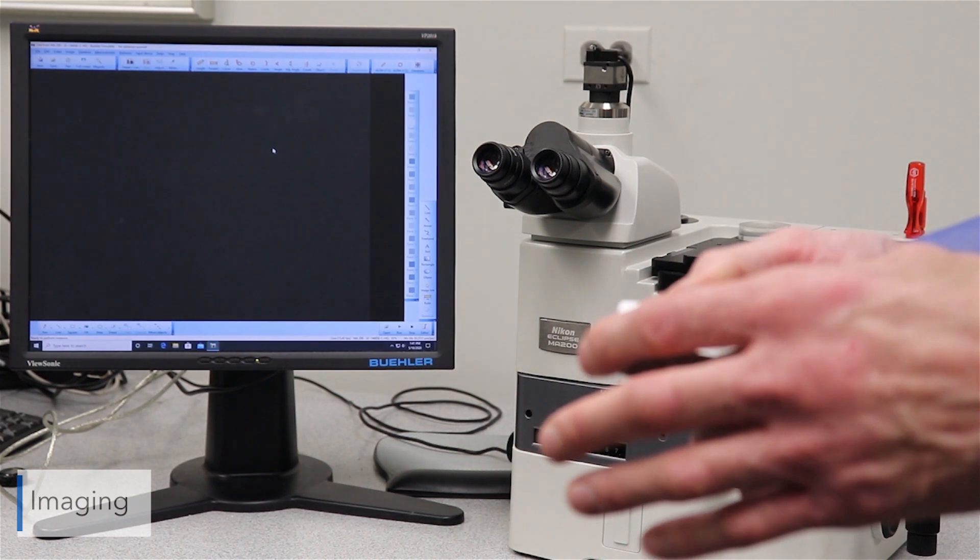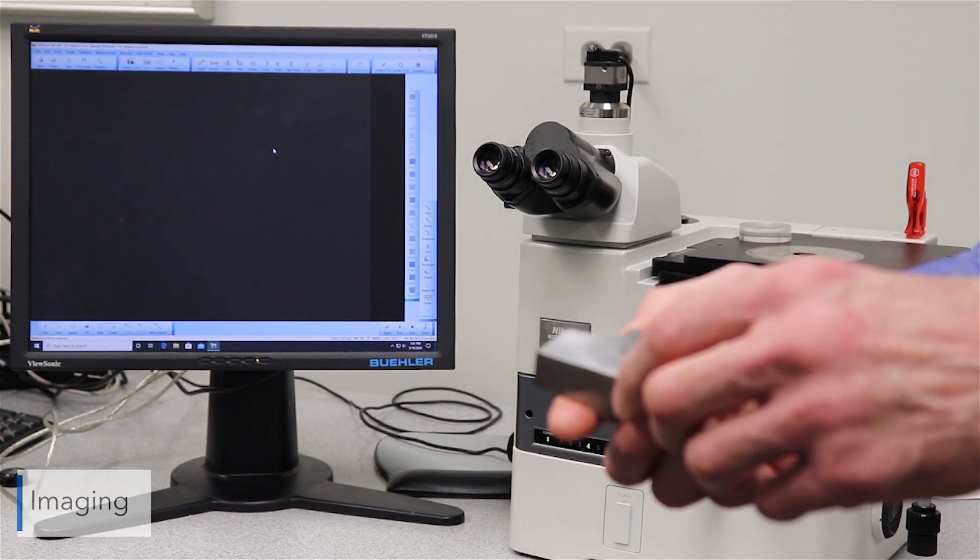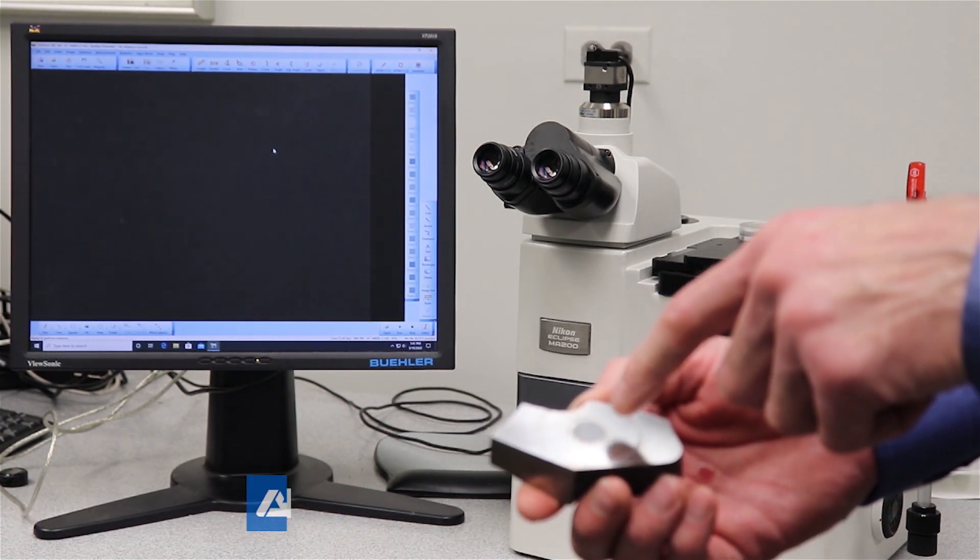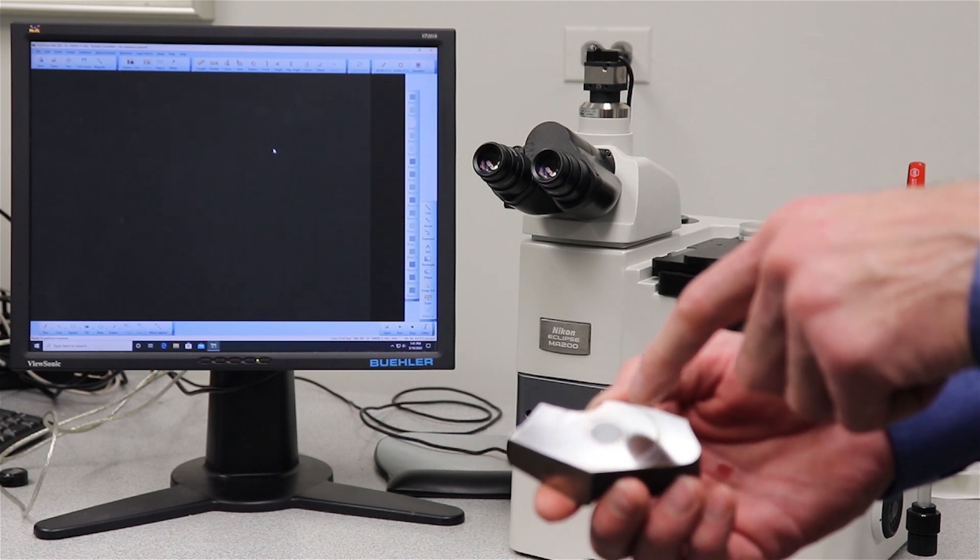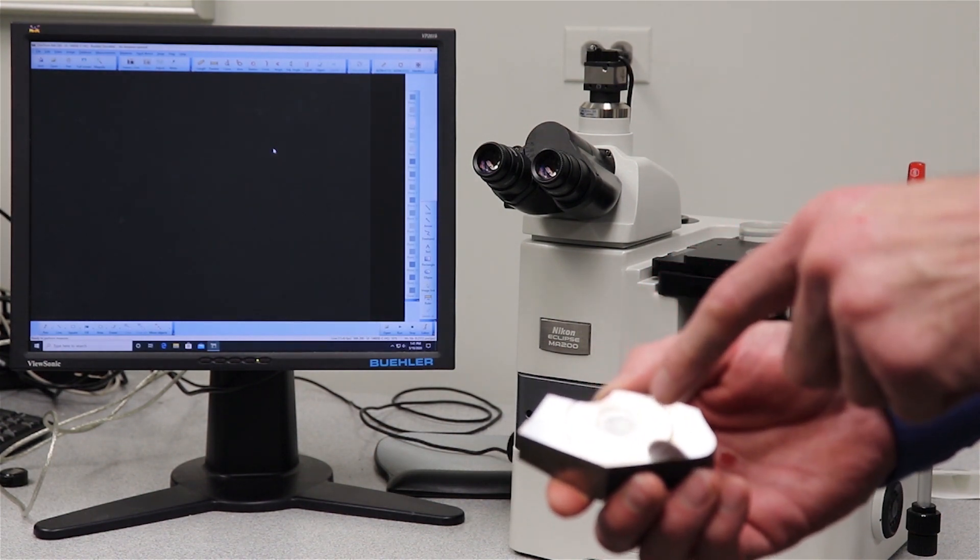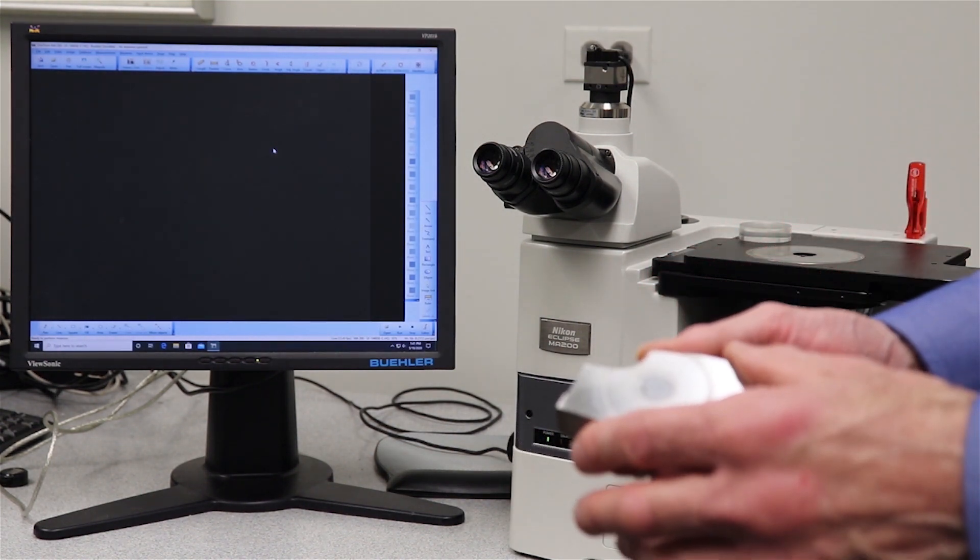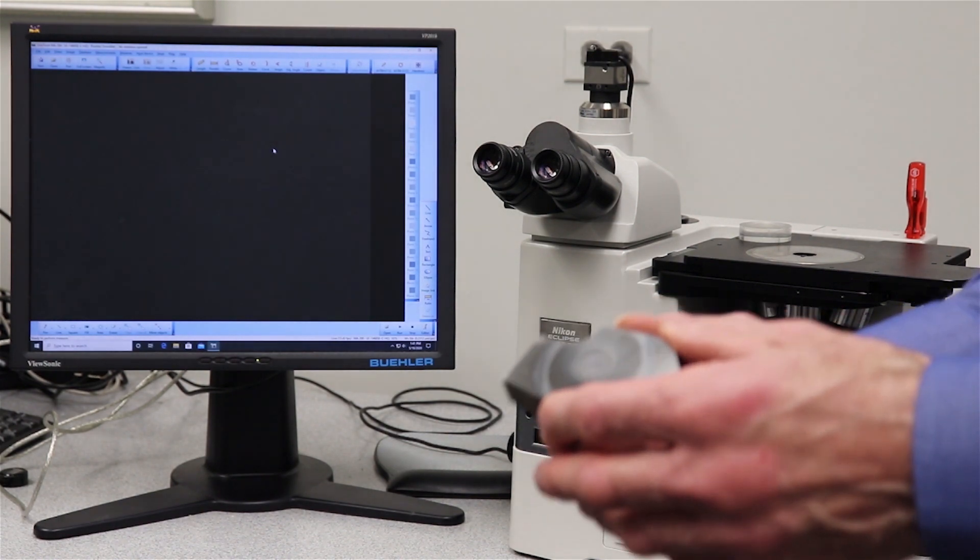We have our sample that we've electropolished. This is the 4130 steel sample. We've got our selected area in here where we have the mask on, and this is the surface area here that's been polished and etched. We're going to put this on the microscope and take a look at the microstructure.